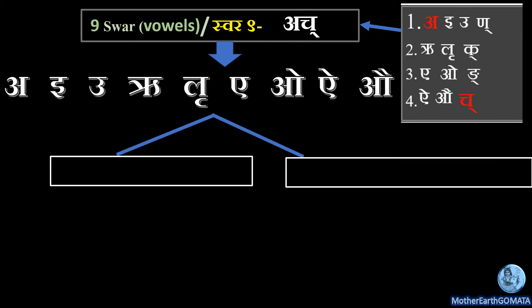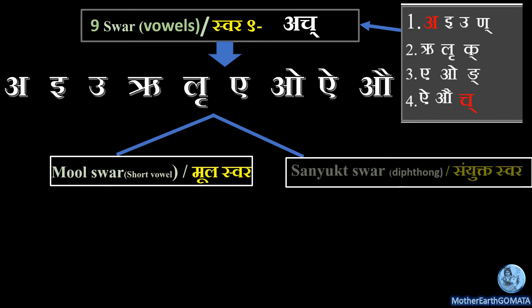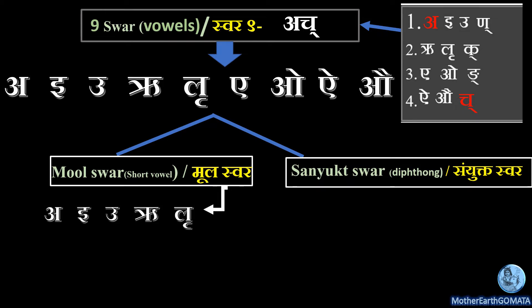Under these nine Swar there are two categories: Mul Swar and Sanjukt Swar. The five letters A, E, U, R, L are Mul Swar because they are self-sufficient and independent — that is, these letters do not require the help of any other letter for their formation. The four letters A, O, I, O are Sanjukt Swar because these letters are formed with the help of two Swar.